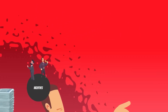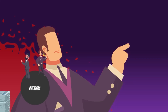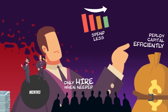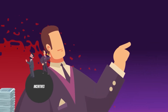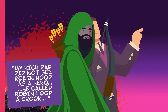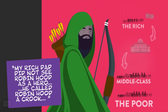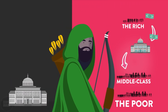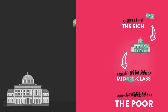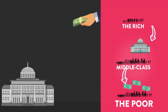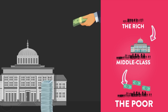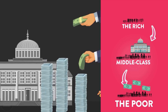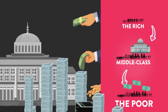Now put yourself in the shoes of Rich Dad — a business owner. Your incentive is to spend less and only hire when needed. At the end of the day, you may deploy your capital in a more efficient manner because it is your money. My Rich Dad did not see Robin Hood as a hero — he called Robin Hood a crook. This economic theory of taking from the rich and giving to the poor and middle class only lasted until the government's need for more money led to taxes being levied on the middle class and the poor.